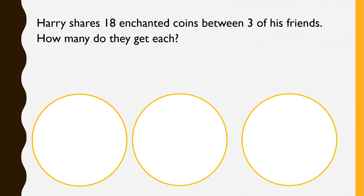Harry shares 18 enchanted coins between three of his friends. How many do they get each? I know with the word 'shares' that I would need to use the method of division. So he's got 18 enchanted coins and he needs to share them between three friends. I've got three groups on the screen and I'm going to share 18 dots equally between each group.